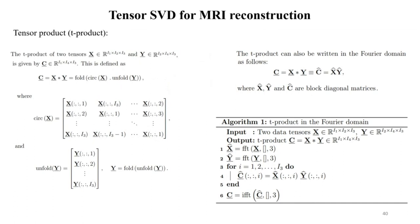A tensor product of two tensors is a multiplication of the circulant matrix by an unfolding of the second tensor Y. The circulant matrix can be expressed such that the tensor operation becomes a multiplication in the Fourier domain, where C, X, Y are block diagonal matrices. We implement this operation in our reconstruction optimization.